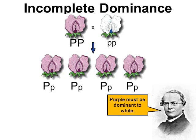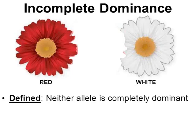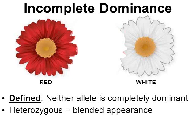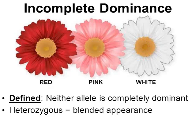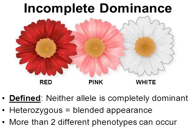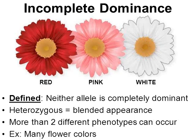Incomplete dominance is very different — neither allele is completely dominant. Heterozygous individuals blend their appearance. For instance, if one parent is red and one parent is white, the heterozygous offspring would be pink. Red and white blend to make pink. This explains why some genes can produce more than two phenotypes — with Mendel's pea plants the flowers were only ever purple or white, never a third option. This explains why many flowers exhibit more than just two colors.